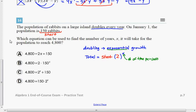So if I look at this story, it says which equation can be used to find the number of years, x, it will take for the population to reach 4,800. So we want a total population of 4,800. So basically, in this case here, I would put the 4,800 in for the total.